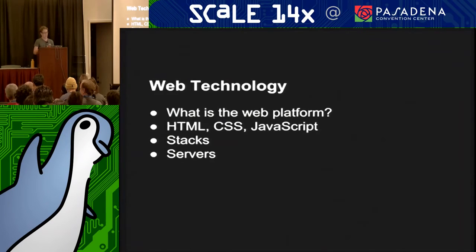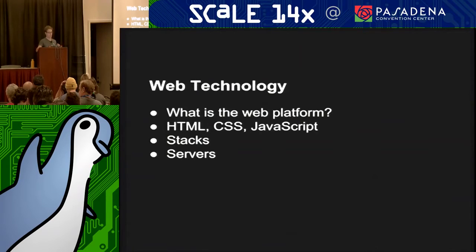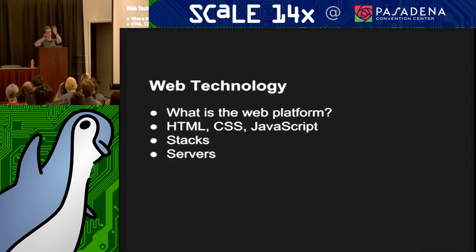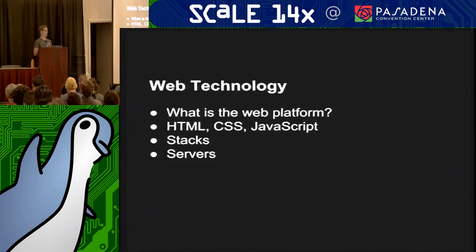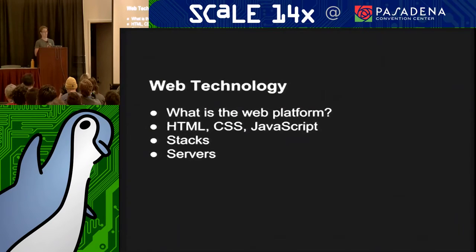The databases I just talked about were all relational databases. That means you have entities — tables in a database — for users, pages, posts, and they all relate to each other: this post belongs on that page, it was created by this user. But relational isn't always the right tool for the job. If you're building a chat client or a logging tool, you want something called a NoSQL or document store database. You might look at CouchDB, MongoDB, or Cassandra — there are lots of options for NoSQL or document stores.